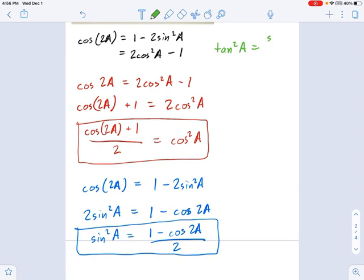Well, we could use the quotient identity to say that's sine squared A over cosine squared A, right? And if I know sine squared A, and I know cosine squared A, we could just divide those two. So tangent squared A is going to be, and bear with me here, 1 minus cosine of 2A all over 2. And it's that thing divided by 1 plus cosine of 2A all divided by 2, right?